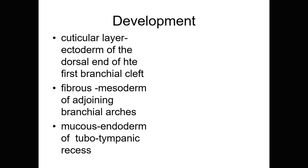The tympanic membrane is derived from all three germinal layers. The outer cuticular layer is derived from the ectoderm of the dorsal end of the first branchial cleft. The intermediate fibrous layer is derived from the mesoderm of the adjoining branchial arches. The innermost mucous layer is derived from the endoderm of the tubotympanic recess.